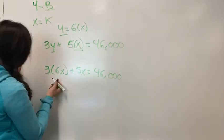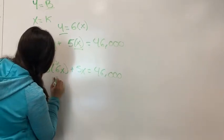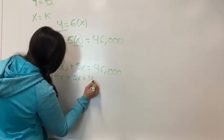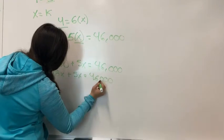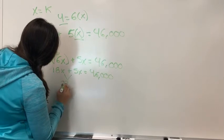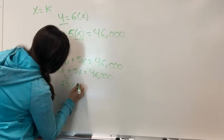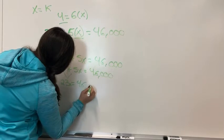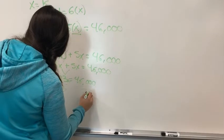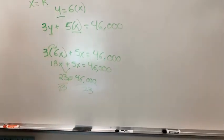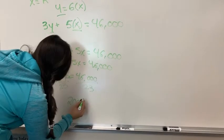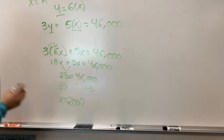And so we can work this and it would be 18x plus 5x equals $46,000. This equals 23x equals $46,000. We divide by 23 to get x by itself and your answer is $2,000.